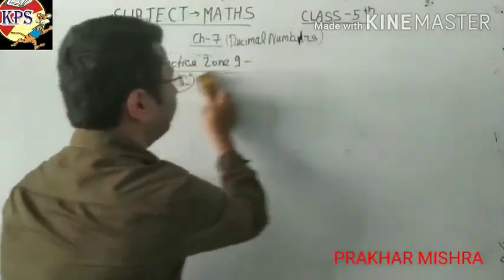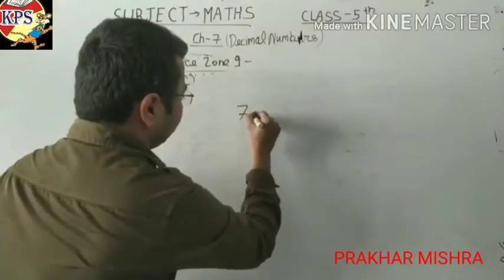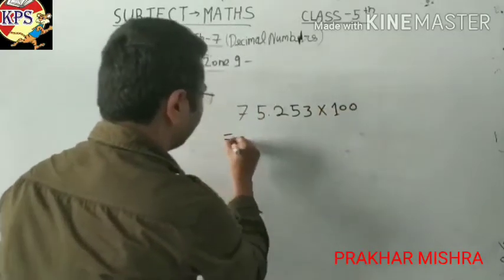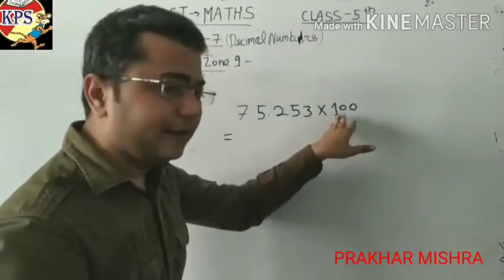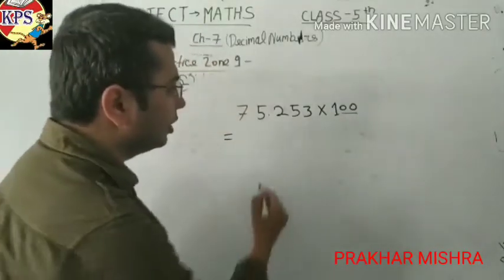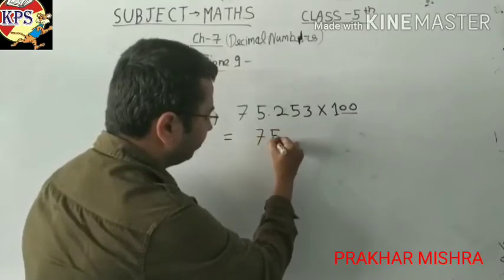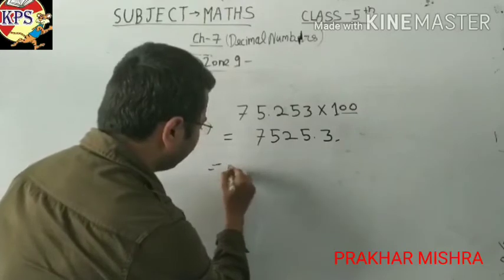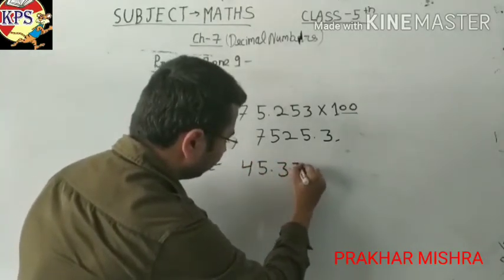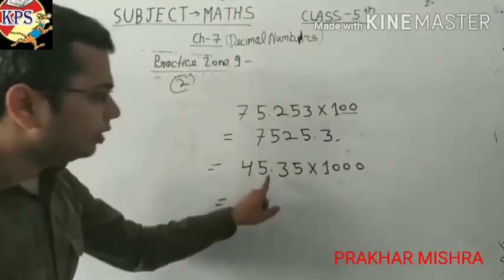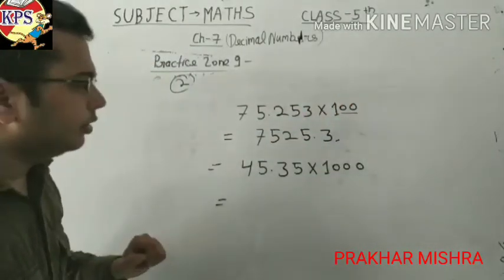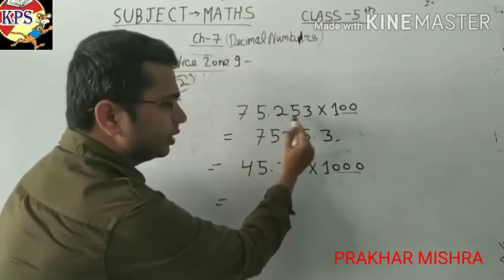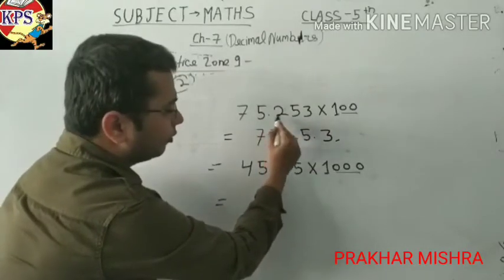I think this is confusing, so I want to explain with a second number. If the quotient is 75.253 multiplied by 100, because two zeroes are given, we shift the point after two numbers: 7525.3 — very simple. Now in the second quotient, the quotient is 45.35 into 1000. Both quotients are different because one has two zeroes and the other has three zeroes. Here the point was before three numbers and two zeroes were given, so we shift the point after two numbers.